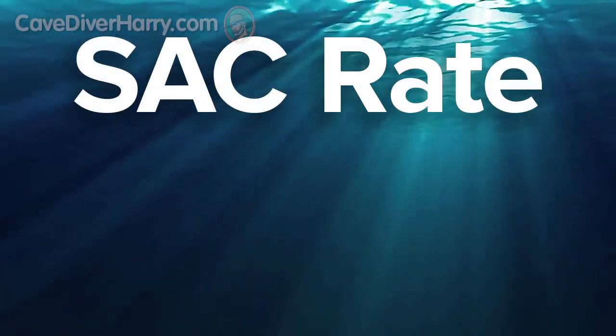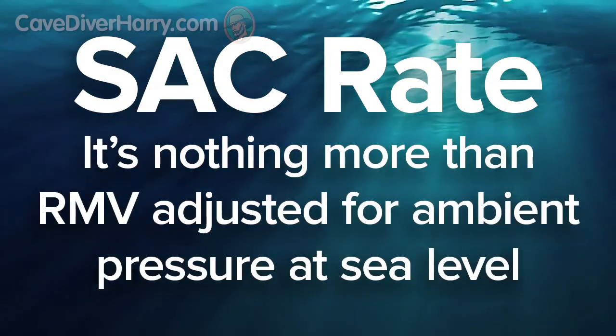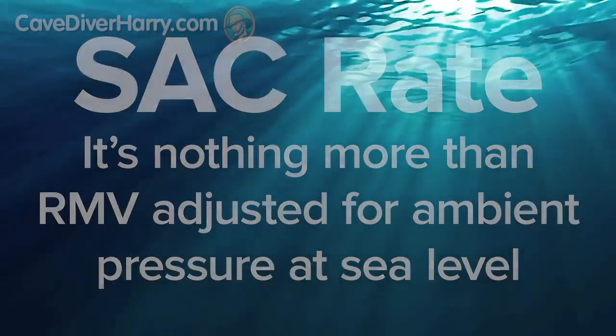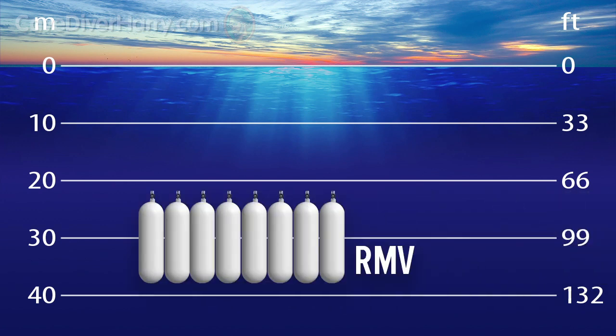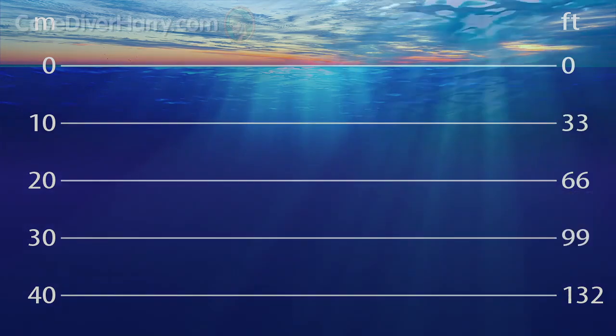SAC rate is nothing more than RMV adjusted for ambient pressure at sea level. In other words, if your RMV at a depth of 4 atmospheres is 8 liters per minute, it means your SAC rate is one-fourth of that, or 2 liters per minute.